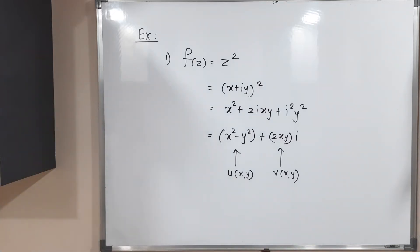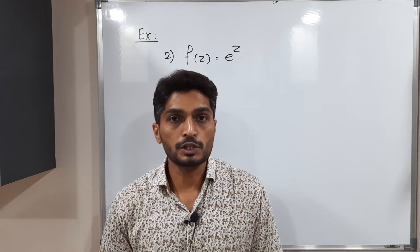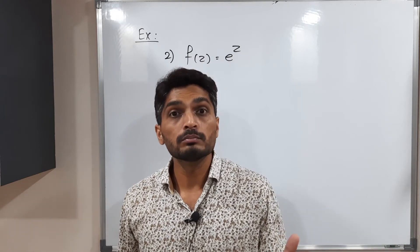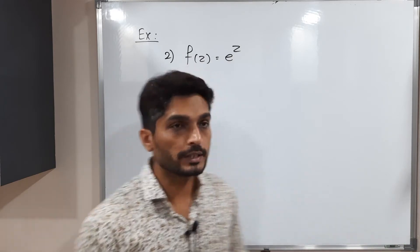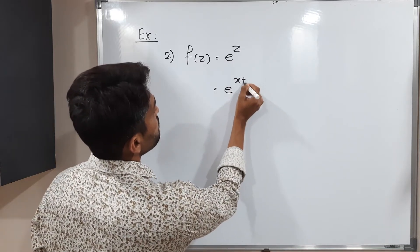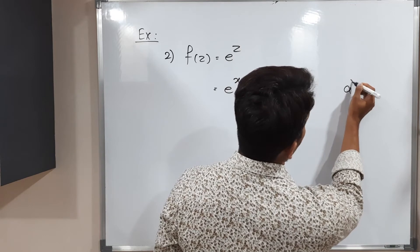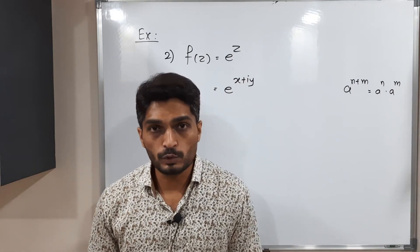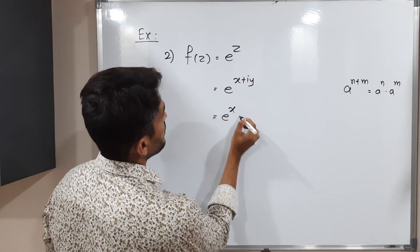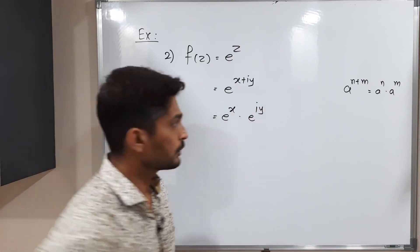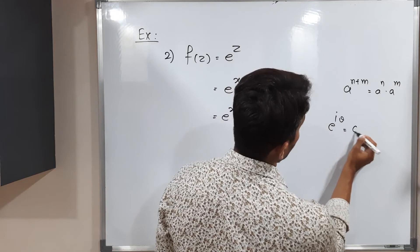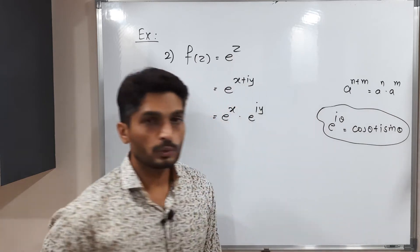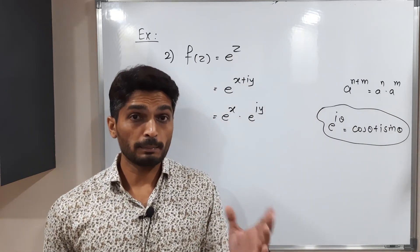Let us discuss one more example. We have f(z) = eᶻ. To separate the real and imaginary parts, we put z = x + iy, so f(z) = e^(x+iy). Using the law of indices, a^(m+n) = aᵐ·aⁿ, this becomes eˣ · eⁱʸ. Using Euler's relation e^(iθ) = cosθ + i sinθ, we can replace eⁱʸ with cos y + i sin y.